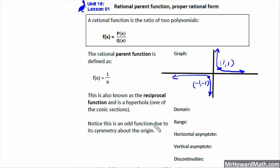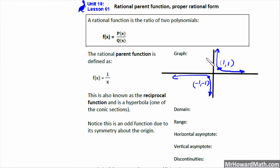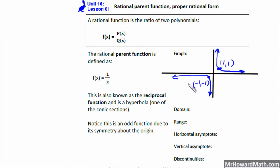This is an odd function due to its symmetry about the origin. If you reflect the quadrant 1 section over the y-axis and then again over the x-axis, it would lay on top of itself. So it is symmetrical about the origin, and by definition that makes it an odd function.